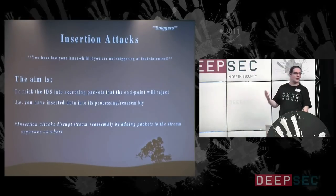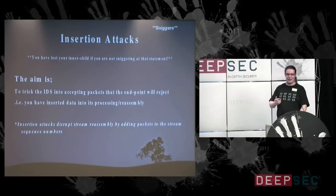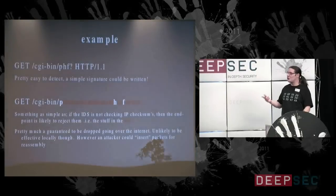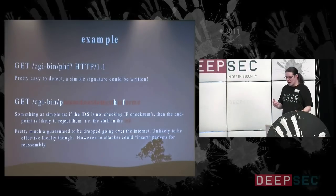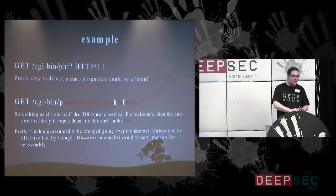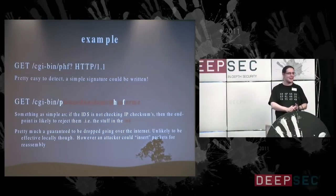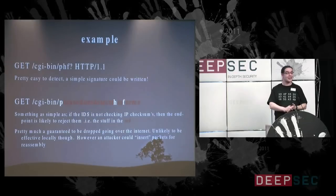Think of your data stream as having Tourette's and the IDS is taking everything said as truth. We can do this with two really simple tricks — we could use either invalid checksums in the IP headers, because, surprisingly, at the cost of overhead, IDS boxes tend not to check checksums.